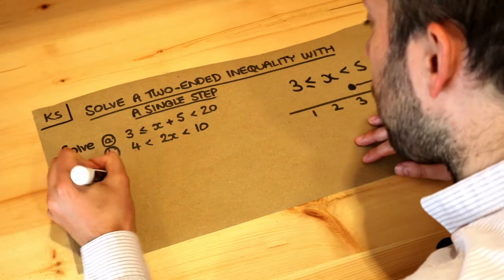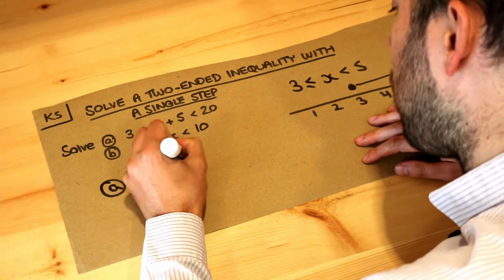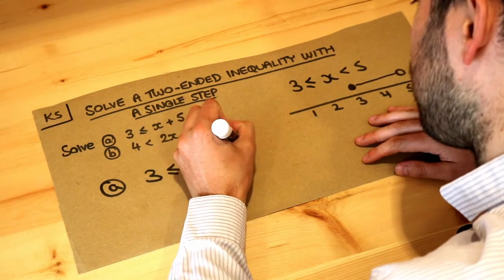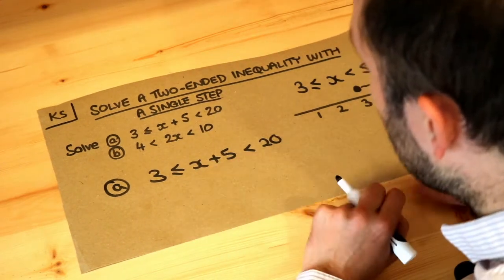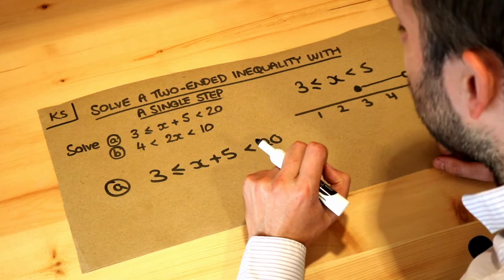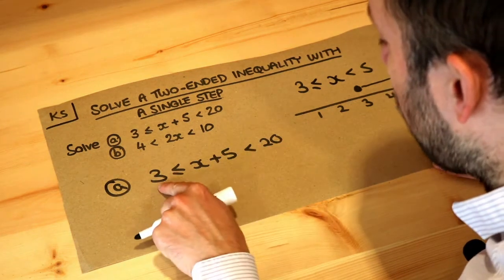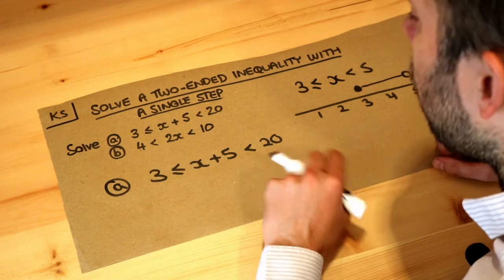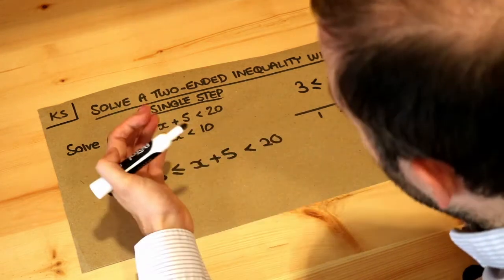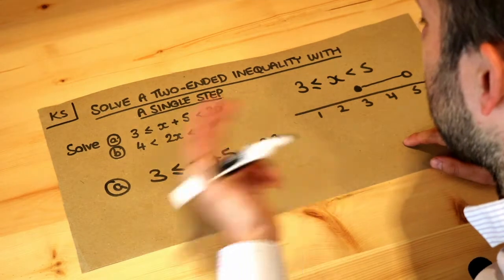So if we look at a, the way we do this is we want to get x on its own within a particular part of the inequality. So in the middle here we want x to be on its own. And what we need to note is that whatever we do to one particular part of the inequality, so the left or the middle or the right, we have to do the same to the others. So if we add something to one thing we have to add it to the others.